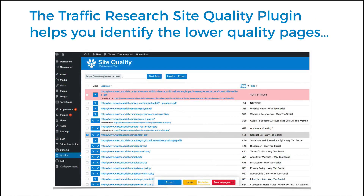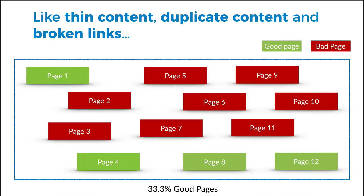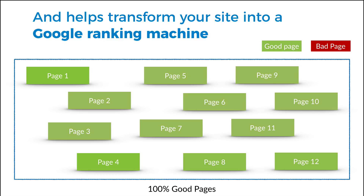The Traffic Research Site Quality plugin for WordPress helps you identify lower-quality pages by running a scan of your entire website. It identifies things like thin content, duplicate content, and broken links — and we're adding even more features. You can then quickly transform your website into a Google ranking machine, making most of your pages good so Google sends all its traffic your way.